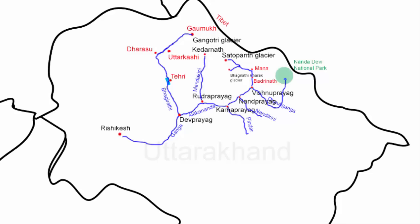At Rishikesh, river Ganga leaves the Shivalik Hills — the lower mountains of the Himalayas — and flows into the plains of northern India. Here you will also find the Rajaji National Park. The Ganga flows through the Rajaji National Park and reaches the town of Haridwar, which is around 20 to 25 kilometers from Rishikesh.